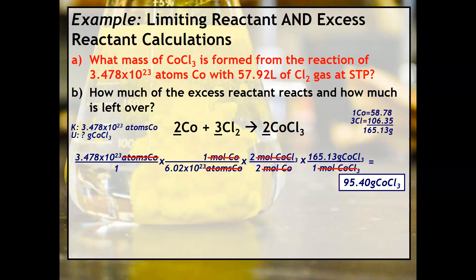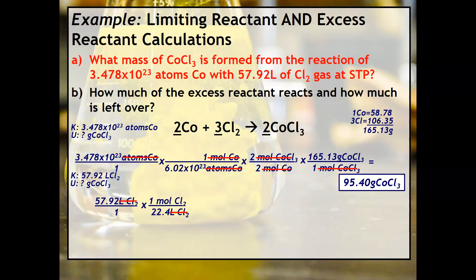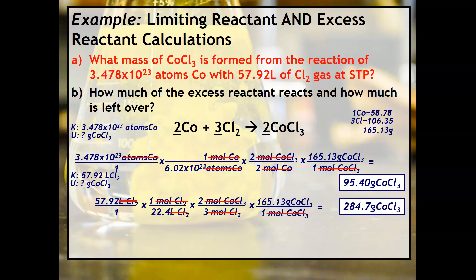However, this is only true if we have an unlimited supply of the other reactant. We only have 57.92 liters of Cl₂, so our next calculation starts with 57.92 liters of Cl₂, and the unknown is grams of cobalt-3 chloride. Since we have liters, we use 22.4 liters per mole — no molar mass needed. The mole ratio is 3 moles of Cl₂ to 2 moles of cobalt-3 chloride. When you perform this calculation, you should get 284.7 grams of cobalt-3 chloride.